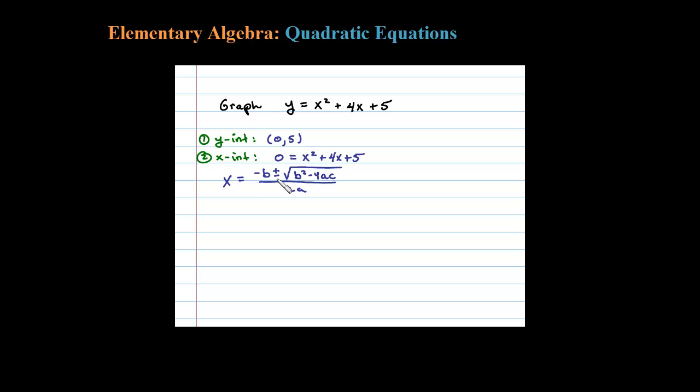x equals negative B plus or minus the square root of B squared minus 4ac all over 2a. Now let's plug in some numbers here: negative B plus or minus the square root of B squared, which is 16, minus 4 times a times c, all over 2 times a, where a is 1.